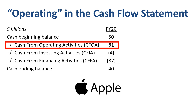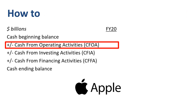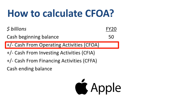Where does this $81 billion come from and how is it calculated? The simple answer is: if you start the year with $50 billion, which can be verified from the bank statements, and end the year with $40 billion, which can also be verified from the bank statements, then the total cash flow was a negative $10 billion — in other words, a net cash outflow.